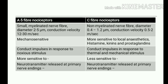Comparing A-delta and C fiber nociceptors: A-delta fibers are small myelinated nerve fibers with a diameter of 2 to 5 micrometers and conduction velocity of 12 to 30 meters per second, whereas C fibers are non-myelinated with a diameter of 0.4 to 1.2 micrometers and conduction velocity of 0.5 to 2 meters per second. A-delta fibers are more sensitive to pressure and are known as mechanosensitive receptors, whereas C fibers are more sensitive to local anesthetics, histamine, kinins, and prostaglandins.